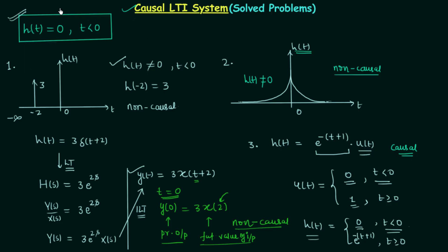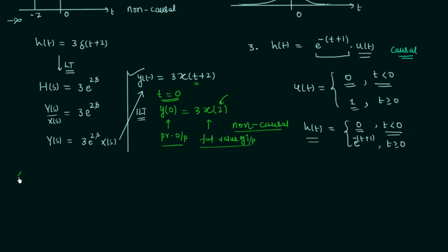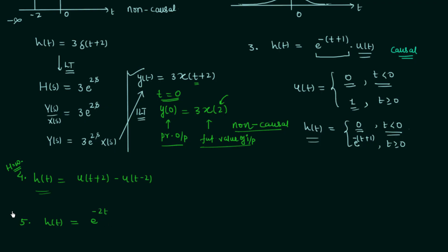It is very easy to use this causality property and obtain an answer within seconds. The fourth problem is a homework problem: the impulse response is h(t) = u(t+2) - u(t-2). First obtain the waveform and check whether h(t) is 0 for t less than 0. The fifth homework problem has h(t) = e^(-2t). Solve both problems and post your answers in the comment section.